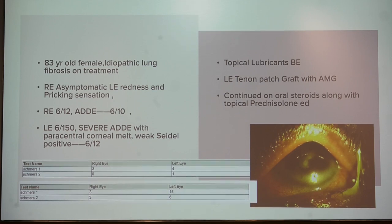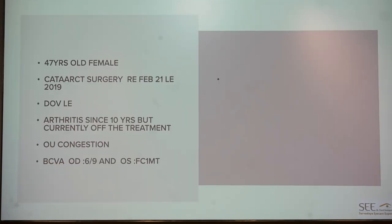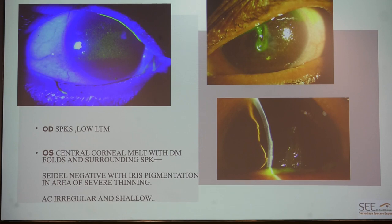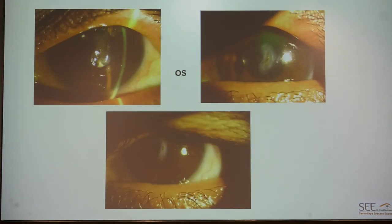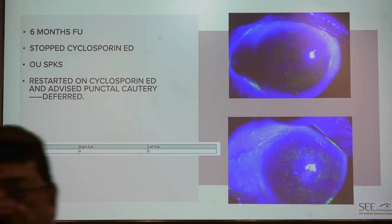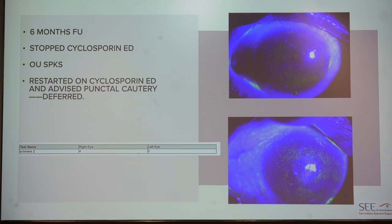Another patient, a 47-year-old female with prior cataract surgery and known arthritis for 10 years who had stopped treatment, presented with sudden deterioration in the left eye with vision of finger counting at one meter. The right eye showed diffuse SPKs and the left eye showed central corneal melt with irregular anterior chamber though Seidel was negative. She was advised a Tenon's patch graft but deferred; she was started on oral steroids with lubricants and cyclosporine. Within two days her surface stabilized, and at six months there was good ocular surface stability. However, compliance was an issue and she stopped cyclosporine at six months, leading to recurrence of stain-positive areas.